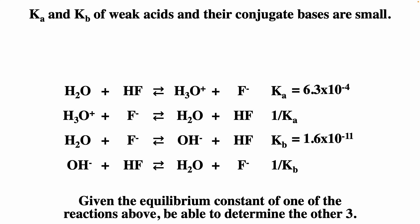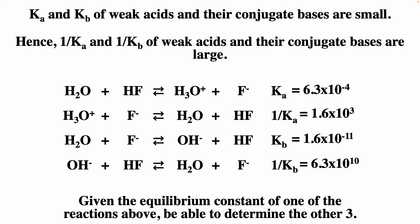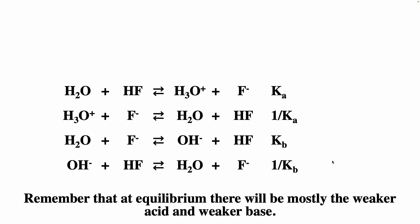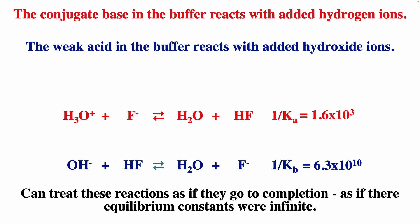Ka and Kb of weak acids and their conjugates are very small. 1/Ka of HF and 1/Kb of F⁻ are very large, so you can think of those reactions as going to completion. At equilibrium, there will be mostly the weaker acid and weaker base. For example, hydronium ion is a strong acid, so for the equilibrium with F⁻ forming HF, we'd have mostly products because HF is the weaker acid. The conjugate base of a buffer reacts with added hydrogen ions, and the weak acid in the buffer reacts with added hydroxide ions. Those equilibrium constants are very large, so you can consider those reactions to go to completion.